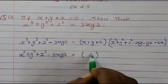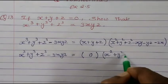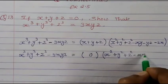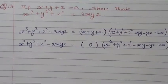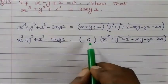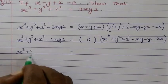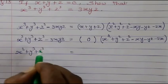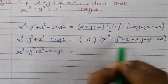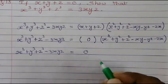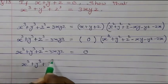In place of x plus y plus z we write 0, and the remaining part stays as it is: x square plus y square plus z square minus xy minus yz minus zx. When you multiply 0 with anything it gives 0. So x cube plus y cube plus z cube minus 3xyz is equal to 0.